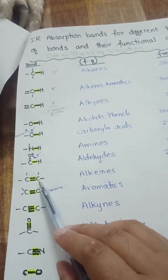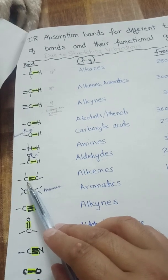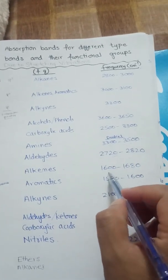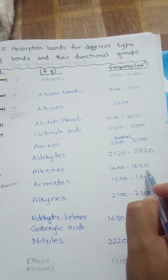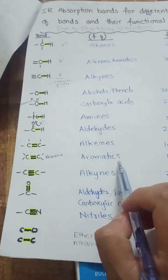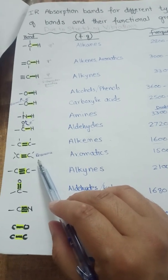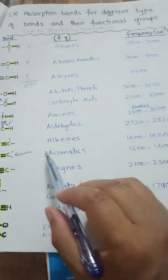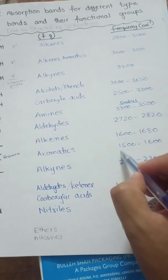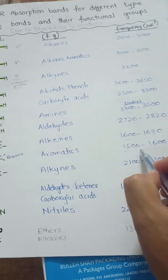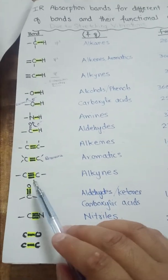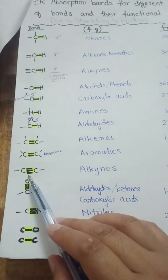For carbon-carbon double bond stretching in alkenes, the absorption frequency is from 1600 to 1680 per centimeter. In aromatic compounds where resonance is present, as we discussed in the previous video, resonance decreases the absorption frequency. Therefore in benzene rings the C=C absorption frequency decreases to 1500 to 1600 per centimeter due to resonance.